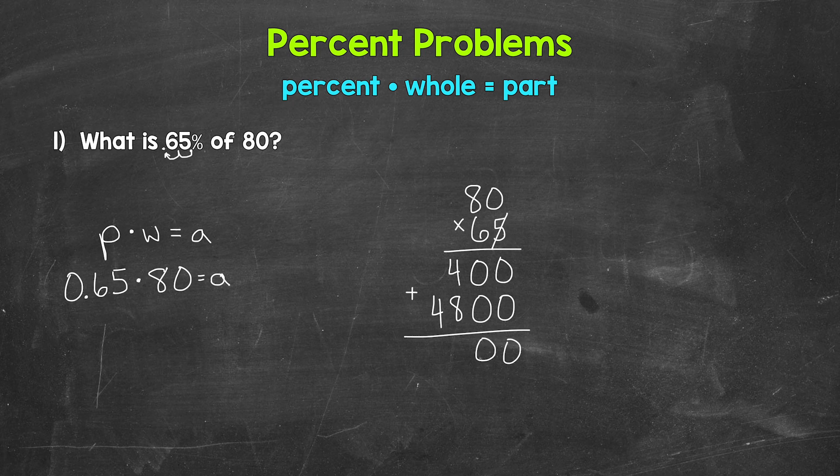0 plus 0 is 0. 4 plus 8 is 12. And then 1 plus 4 is 5. And now we need to place the decimal. So we go back to the original problem and see how many digits are to the right of a decimal. And that's how many digits are to the right of the decimal in our answer. So looking at our original problem, we have 1, 2 digits to the right of a decimal. So we need 1, 2 digits to the right of the decimal in our answer. So we get 52.00, which is just 52.